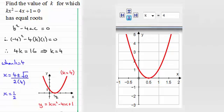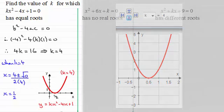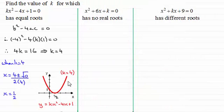In summary, when k equals 4 the equation has just one root and it is one half.